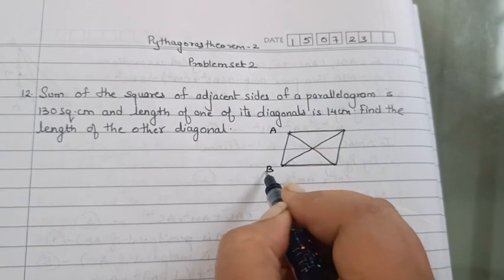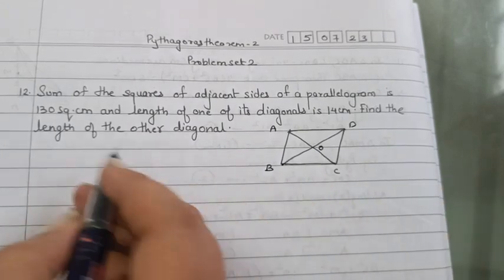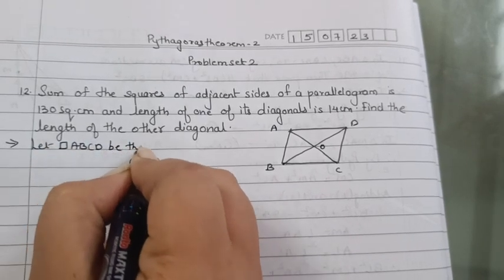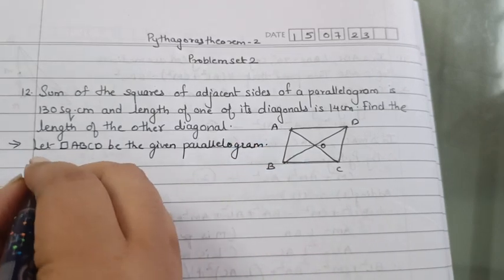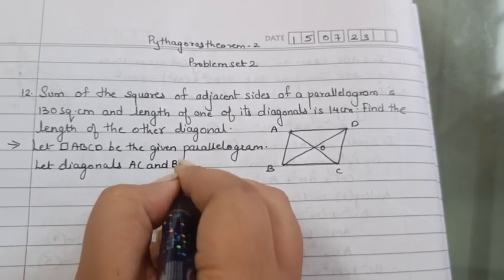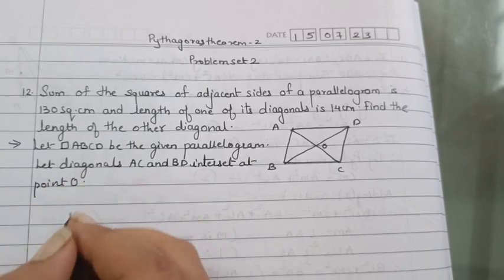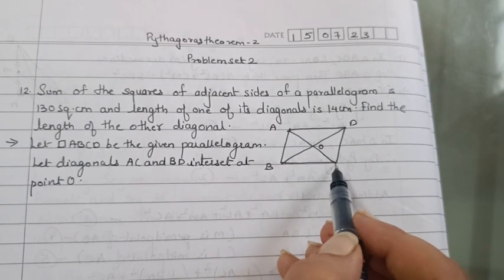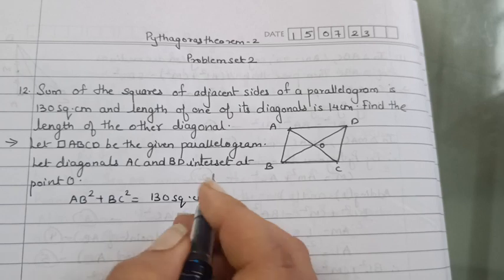So, make a let. Let A, B, C, D be the given parallelogram. And diagonal BD and AC intersect at point O. So, let's start. Let quadrilateral ABCD be the given parallelogram. And let diagonal AC and BD intersect at point O. AB² + BC² is equal to 130 square centimeter.